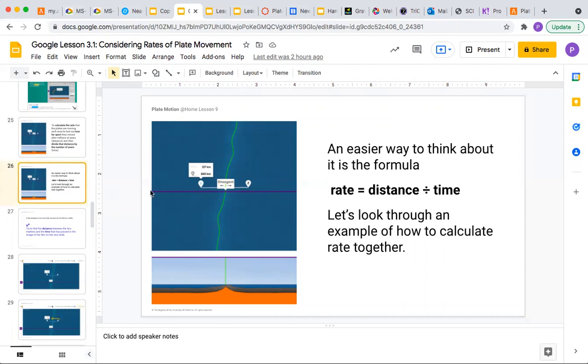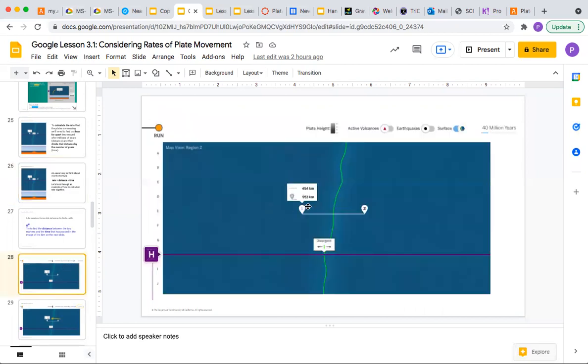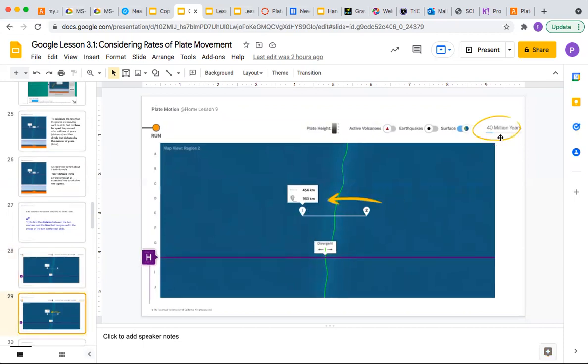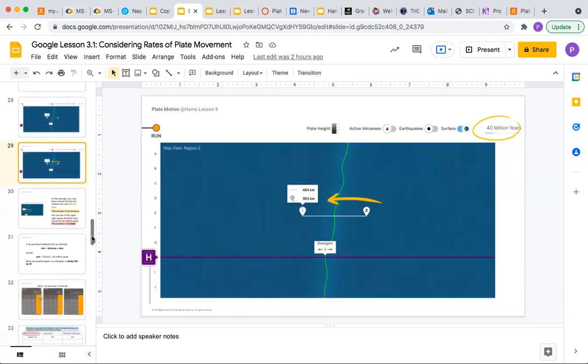In this example, you can see that it was 40 million years, and the distance between one and two is 985 kilometers. So you would click on two, or one, and it will show you the distance between them. That's the second number, and that's what you're going to put on the chart.